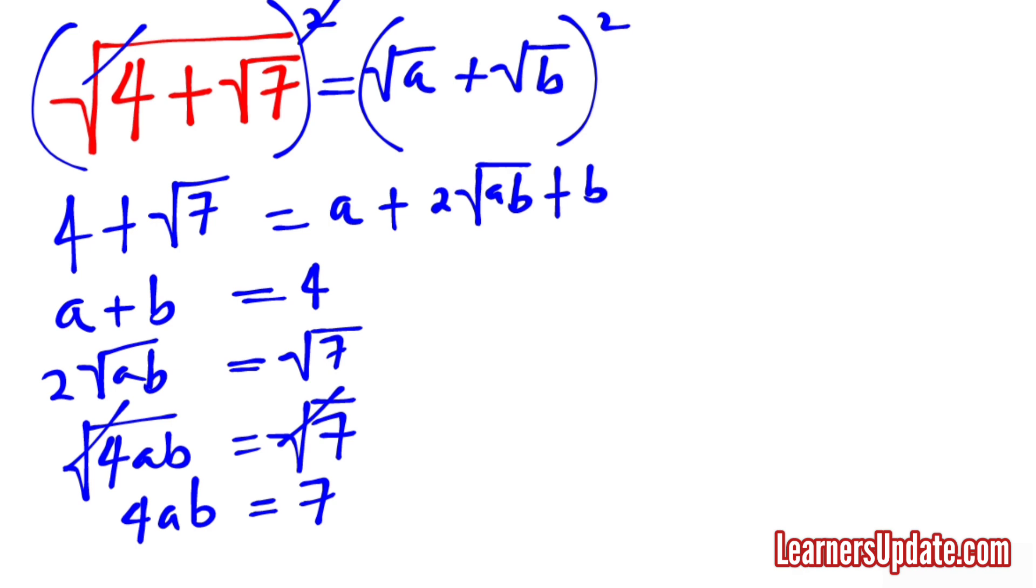Now from here A is the same as 4 minus B which can then be substituted into this equation so that we can form a quadratic equation that can be solved to get A and B.